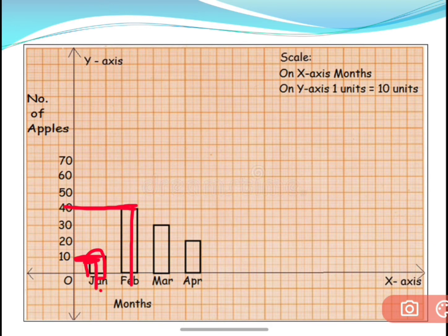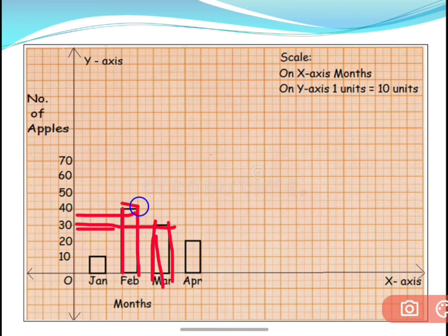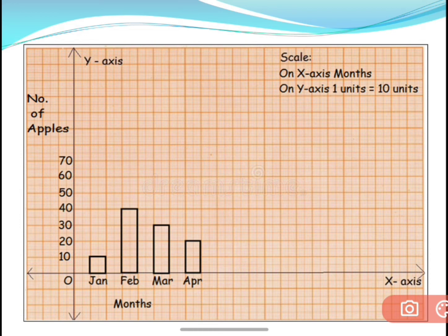Now coming to March — March you have three apples, so three apples means 30. You will place a scale and check where it is matching the March month and 30, then draw the bar like this. Now coming to April — April you have two apples, that becomes 20. Check here, this is your April and then you need to draw a bar. Make sure it is coinciding with 20 on the y-axis and April on the x-axis. In that way you need to draw the bar graph.